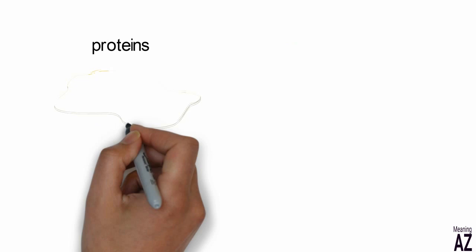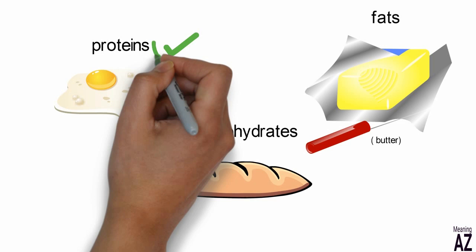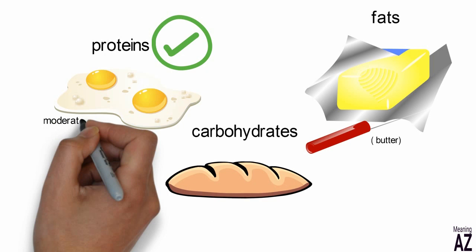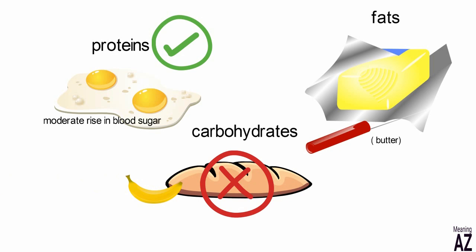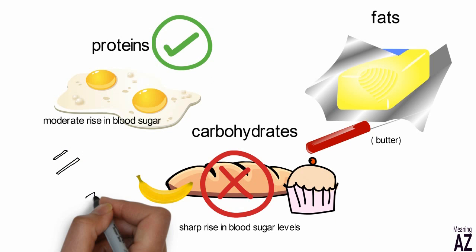The three main food groups are proteins, carbohydrates, and fats. Proteins are converted to glucose in the blood in an inefficient manner and cause a moderate rise in blood sugar. Carbohydrates, on the other hand, no matter what their source—a banana, a piece of cake, candy, whole wheat bread, potatoes, or low-fat cereal—cause a sharp rise in blood sugar levels.